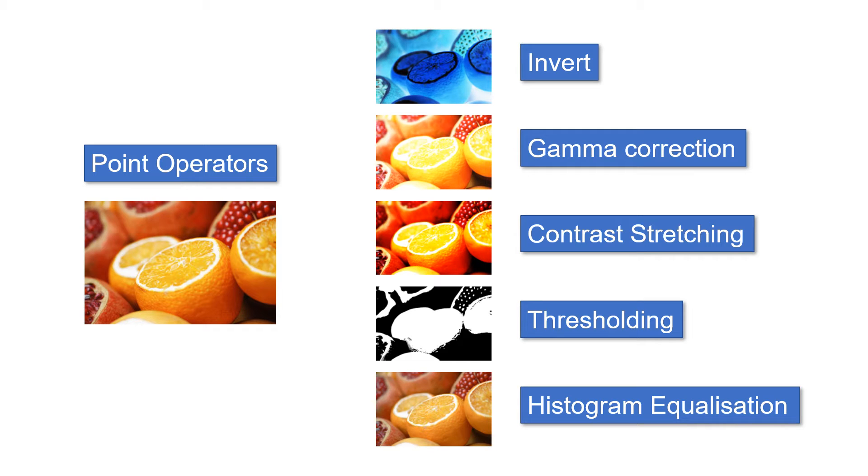Point operators are functions that map a single value at a pixel location to a new pixel value. In the course we will see various point operators including invert, gamma correction, contrast stretching, thresholding, and histogram equalization.